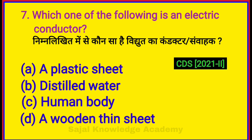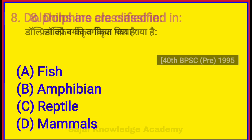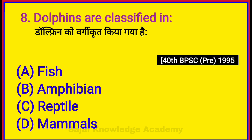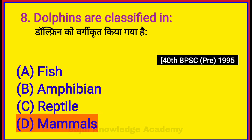Which one of the following is an electric conductor? Option C: Human Body. Dolphins are classified in? Option D: Mammals.